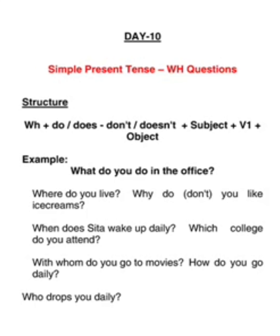Day 10 - Simple Present Tense WH questions. We have so many WH questions like where, when, why, what, which, whom, who, and so on. The structure is: WH + do/does or don't/doesn't + subject + V1 + object. It's really as simple as that.